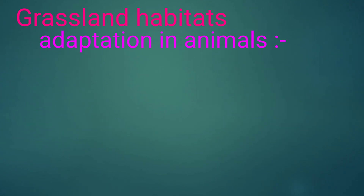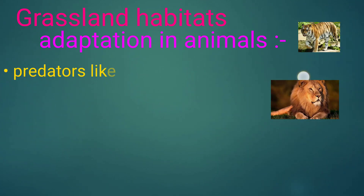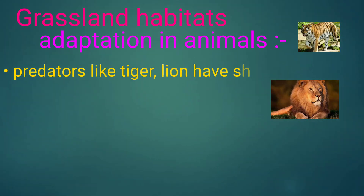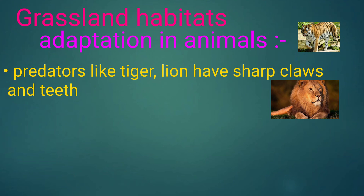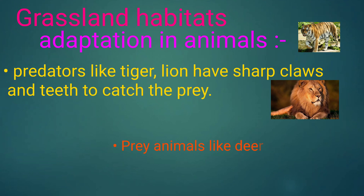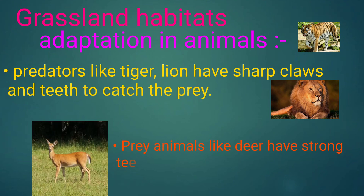Adaptation in animals in grassland habitats: Predators like tiger and lion have sharp claws and teeth to catch their prey. Prey animals like deer have strong teeth to chew hard leaves.